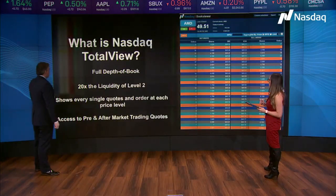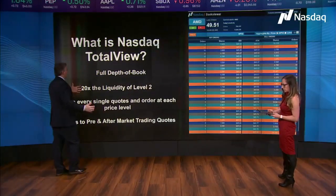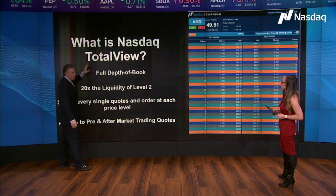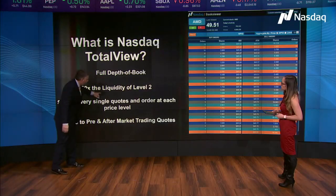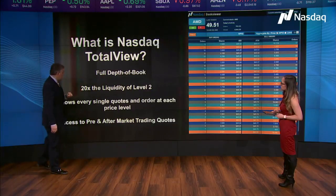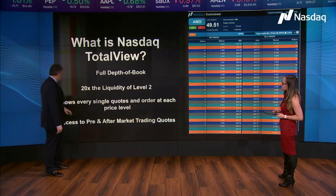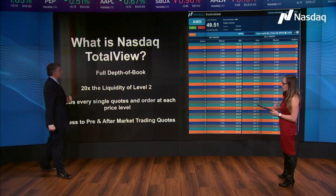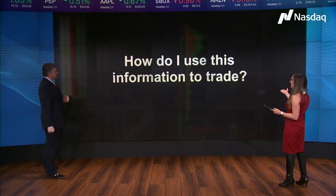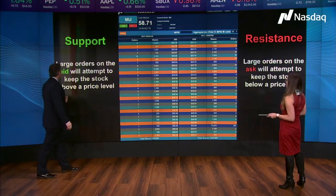Here's a bigger view of Total View, just so viewers can realize what it really is. This comes right off the Nasdaq website. It shows you the full depth of book — you get 20 times more liquidity than Level 2. It shows you every single order being placed out there. And you also get access to pre-market and after-market, which is where a lot of traders make most of their money — looking at those orders.